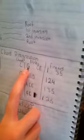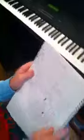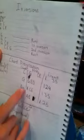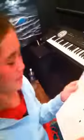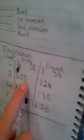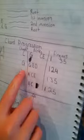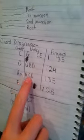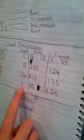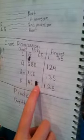This C chord would be G, C, E — and that would be the second inversion of C, because it makes it easier for this chord progression. And then G would be G, B, D — which would be the root for G. And then A minor would be A, C, E, and F would be A, C, F.